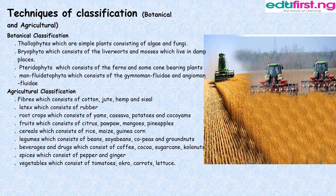Agricultural Classification. Fibers, which consists of cotton, jute, hemp, and sisal. Latex, which consists of rubber. Root crops, which consists of yams, cassava, potatoes, and cocoa yams. Fruits, which consists of citrus, purple, mangoes, and pineapples.